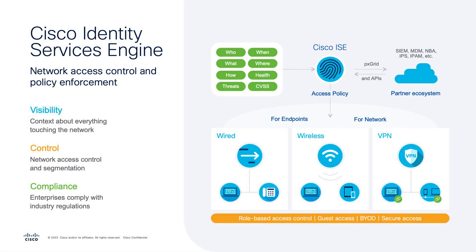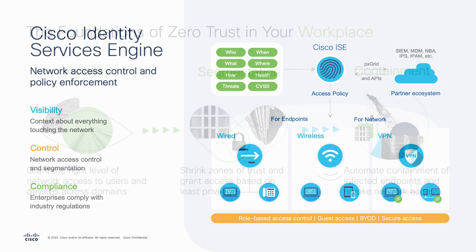Cisco's Identity Services Engine, or ISE, is a solution that enables the ability to define security policies in one location and programmatically push them out across the environment as needed. ISE can leverage context about assets — such as how they're connecting, whether wired, wireless, or through a VPN connection — as well as details about those assets to define what the appropriate policies to apply are.